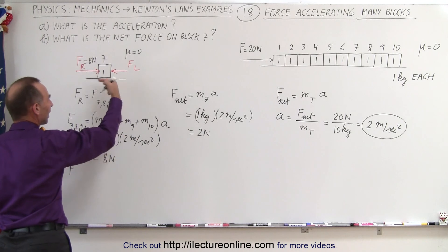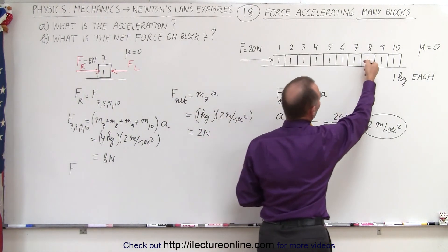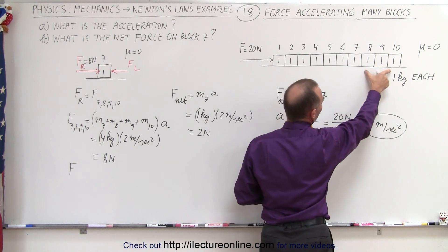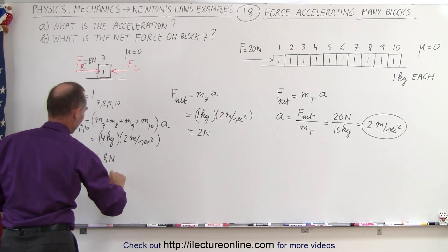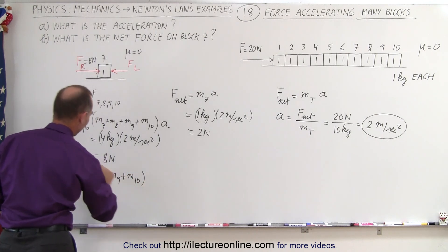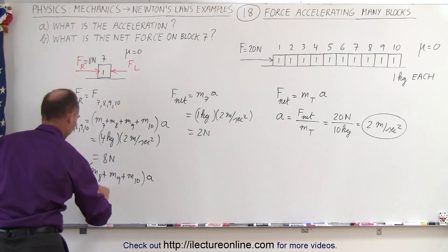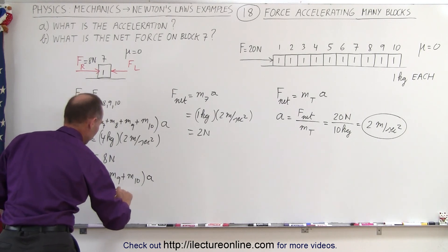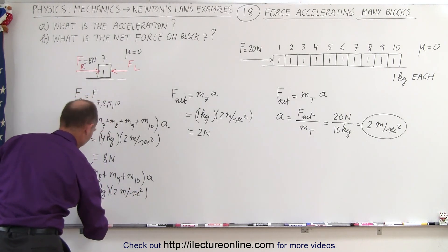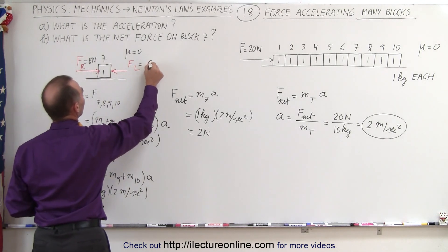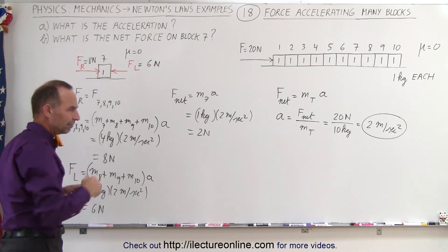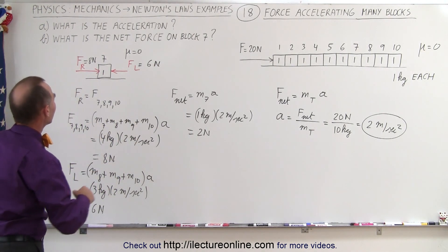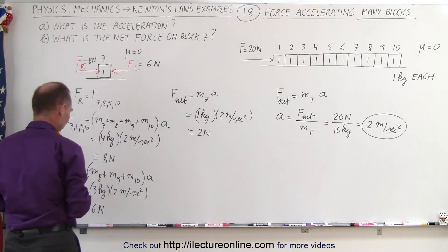And now we have the force pushing back on the other direction, so the force pushing from 8 to 7 is the same as the force that's required to accelerate the last 3 blocks. And so force from the left is equal to mass 8 plus mass 9 plus mass 10, the last 3 blocks, times acceleration, which is 3 kilograms times 2 meters per second squared, which is equal to 6 newtons. And so we have a 6 newton force pushing from the left, or I should say to the left. So we have an 8 newton force pushing this way, a 6 newton force pushing this way.